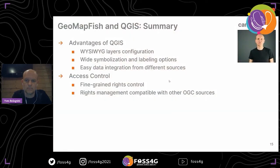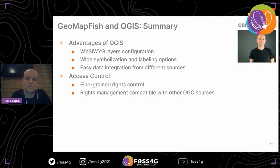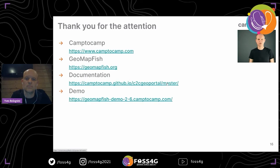So to summarize: the use of QGIS Server as a backend for GeoMapFish has advantages including WYSIWYG layer configuration, white symbolization and labeling options, and easy data integration from several sources. For access control, we have fine-grained rights control, and the rights management is compatible with other OGC sources. Thank you for your attention — here are the links to Camptocamp, GeoMapFish, and the documentation and demo of GeoMapFish 2.6.